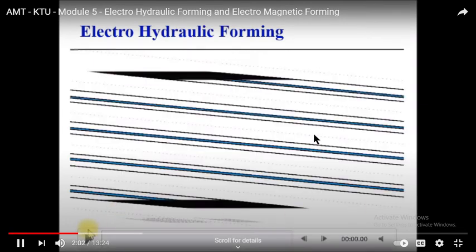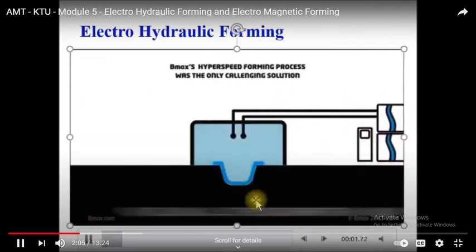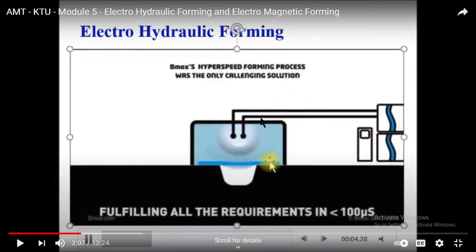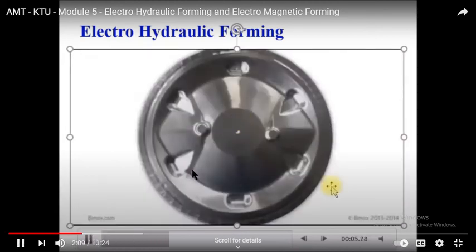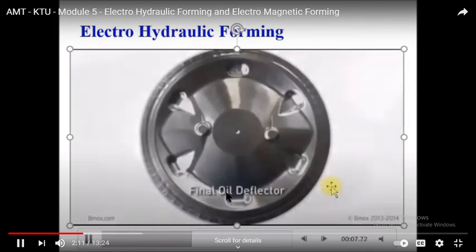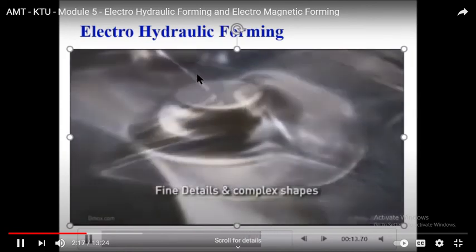Here you can see an animation of the electro hydraulic forming process. These are the two electrodes connected to the capacitor or power source. When the switch is turned on, shock waves are produced between the electrodes. When these shock waves collide with the work piece, the work piece falls inside the die cavity and takes the shape of the cavity. These are examples of final products obtained by electro hydraulic forming.